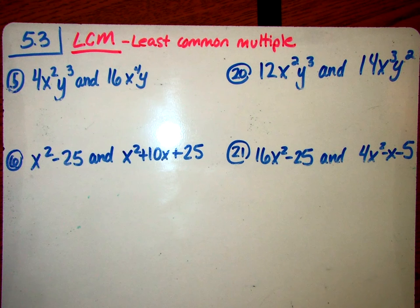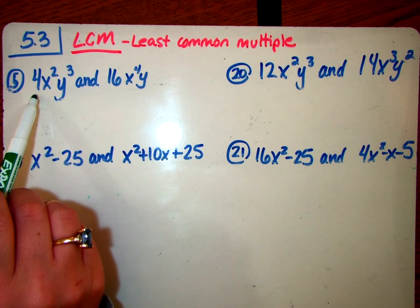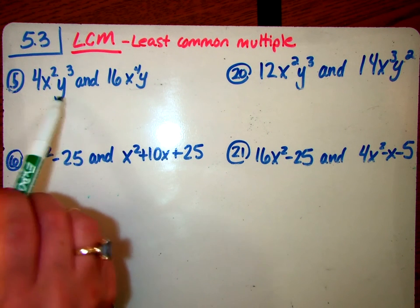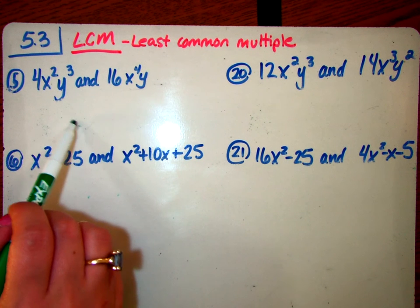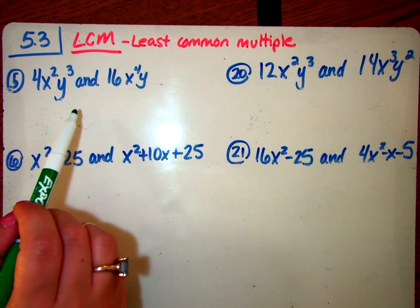The multiples are the number—say I need the multiples of 4. So I go 4 times 1, 4 times 2, 4 times 3. Those are going to be the multiples: 4, 8, 12, 16, those are all multiples of 4.